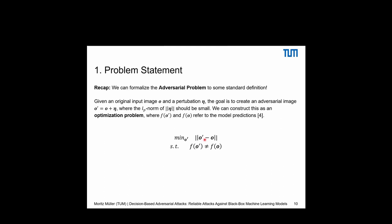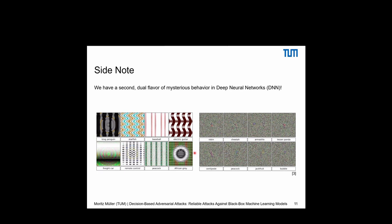There's a dual flavor in deep neural networks: using evolutionary algorithms or similar methods, we can construct images the model classifies with high certainty into a class — like electric guitar or baseball — which makes some sense to us, but we humans would not classify with high certainty. It gets worse with gradient ascent — we only see random noise, but the model is sure it sees a cheetah, a peacock, or a centipede.